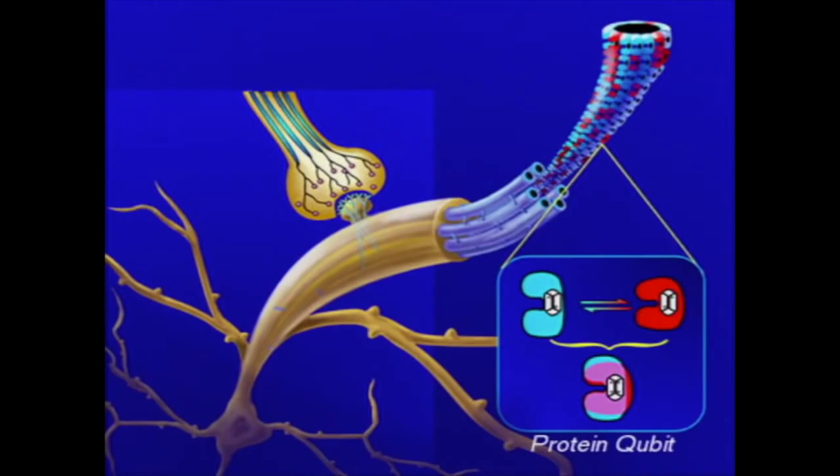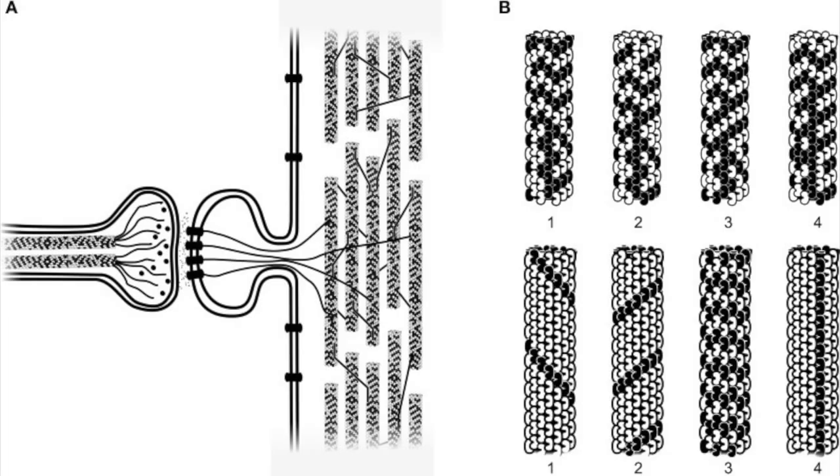This quantum bit can also exist in a state of quantum superposition between both states. This alters the pathways the energy can inhabit in the microtubule.